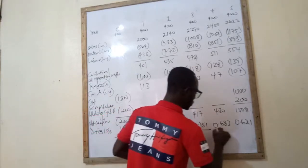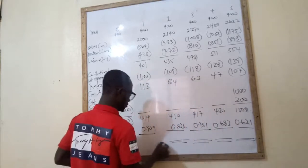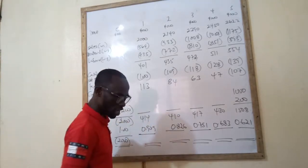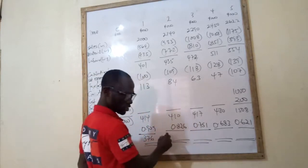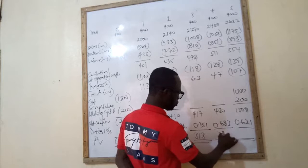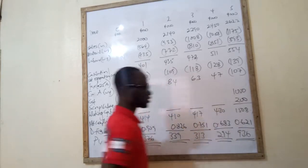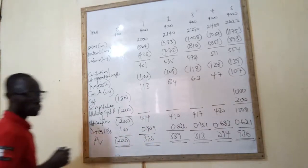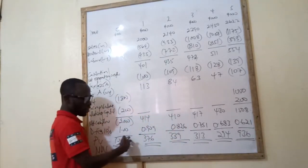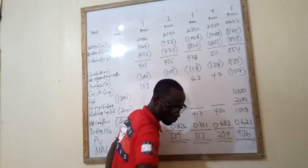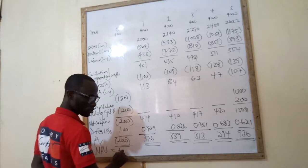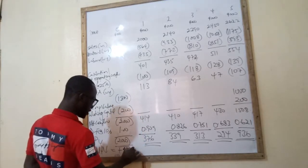Now that we have those discount factors, we calculate the present values. Year zero is still negative 2000; year one gives 376; year two gives 339; year three gives 313; year four gives 297; year five gives 936. Adding all these together, we get a net present value of positive $258,000.